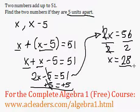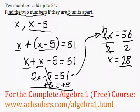Excellent. So that's just one of the numbers. We have been told to find the two numbers. So the second number is just x minus 5, right? So x minus 5 will be 28 minus 5. Therefore, the second number will be 23.